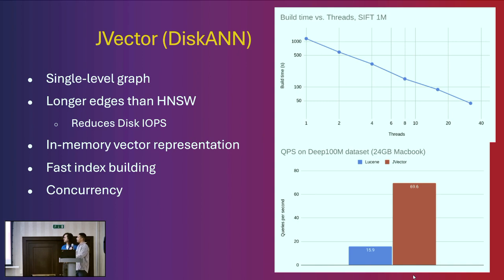On the right we can see the build time in relation to threads with J-vector, and its comparison with Lucene and the Lucene HNSW implementation on the bottom right — showing queries per second on a deep 100-million data set.